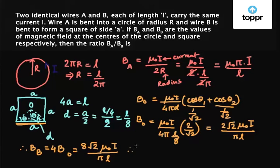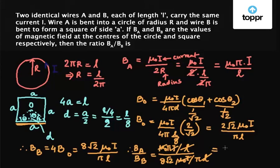Therefore BA upon BB equals μ₀πI upon L divided by 8√2 μ₀I upon πL. L gets cancelled with L, μ₀I gets cancelled with μ₀I. So we are left with π² upon 8√2.